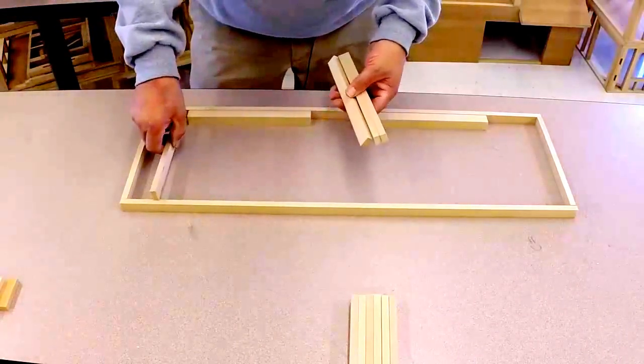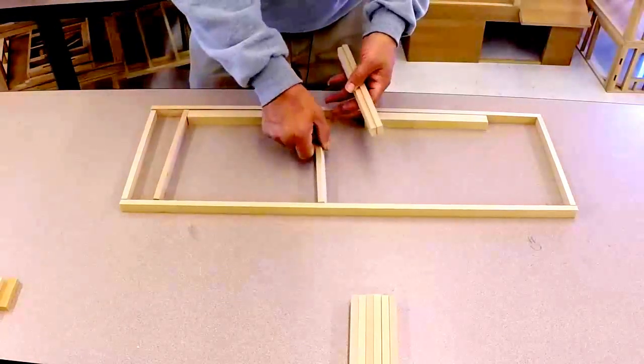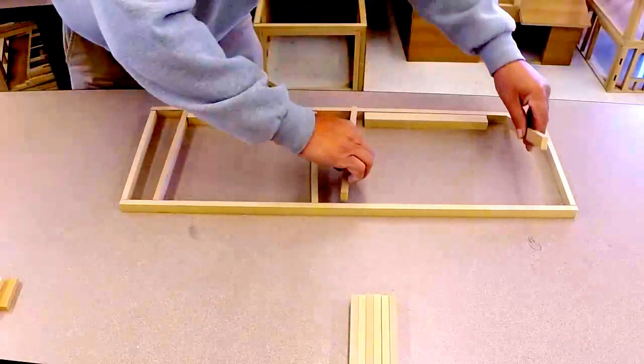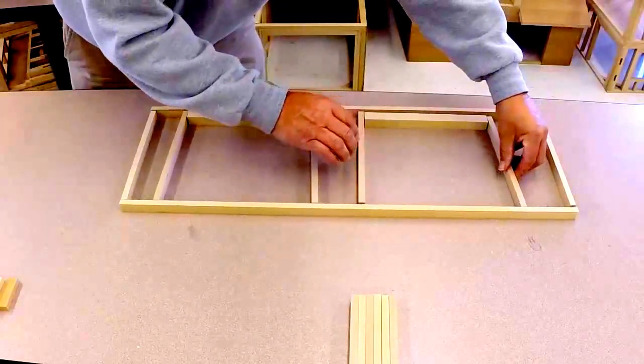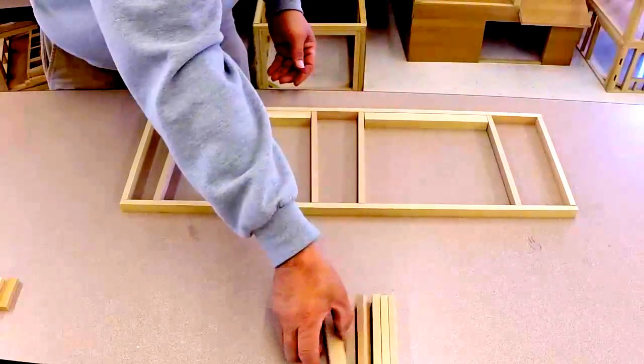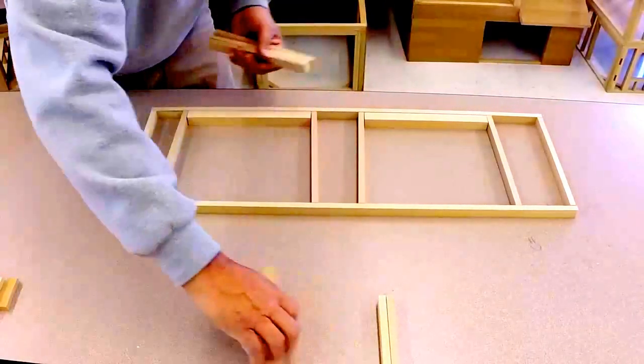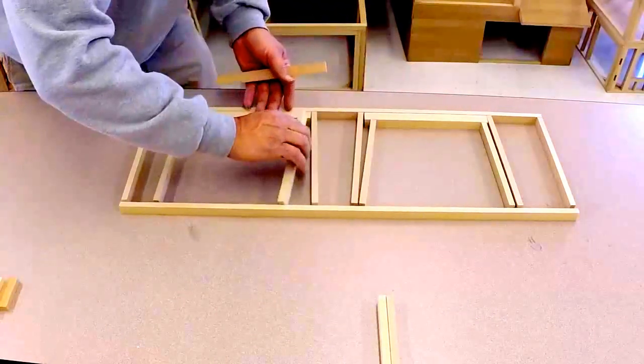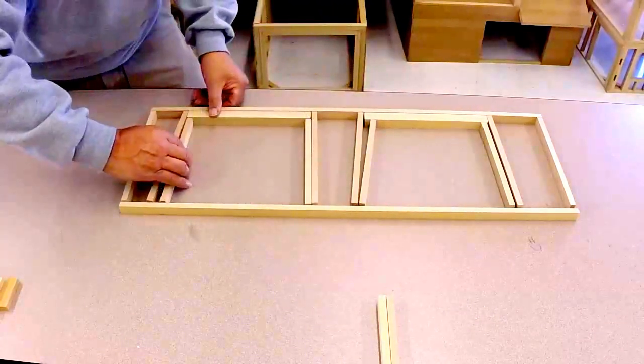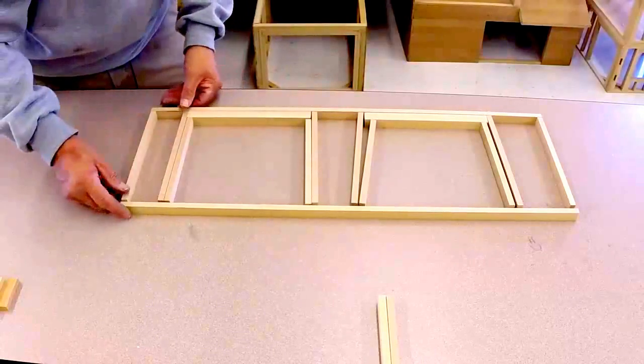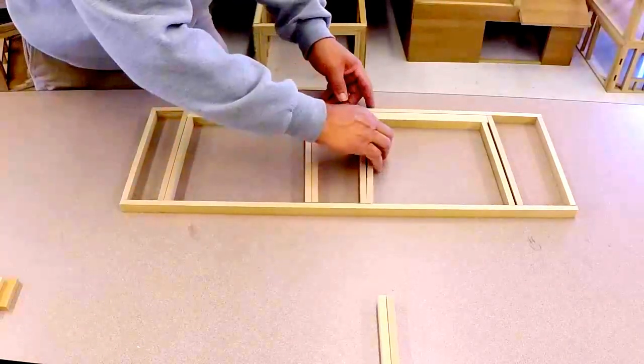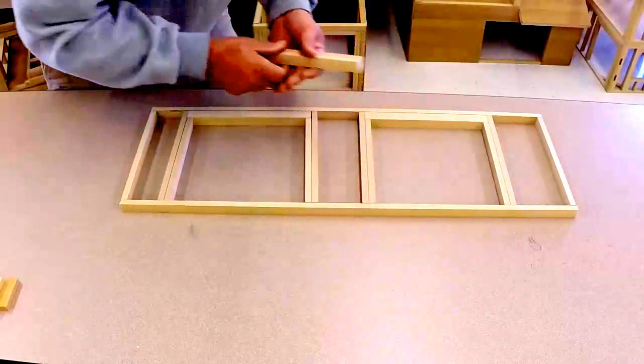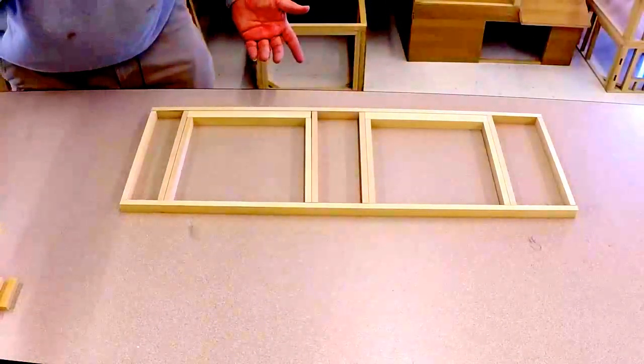Then we take our studs, put them on the sides like that. And then we got our trimmers. We put them inside to hold up the headers. Keep in mind, this is actual real framing, so you're doing it.